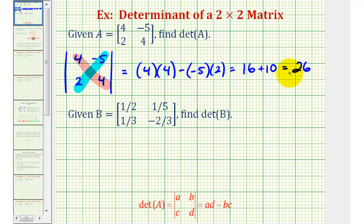Now, let's take a look at a second example where the matrix contains fractions. Of course, the procedure is going to be the same. So the determinant of matrix B is going to be equal to one-half times negative two-thirds minus one-fifth times one-third.